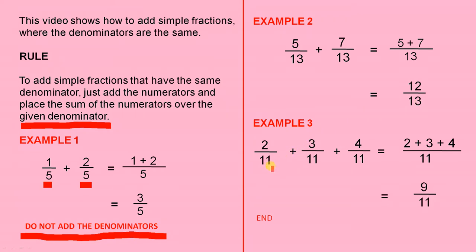Example 3. 2 over 11 plus 3 over 11 plus 4 over 11. The given denominator is 11. Since they are all the same, we are allowed to add the numerators.